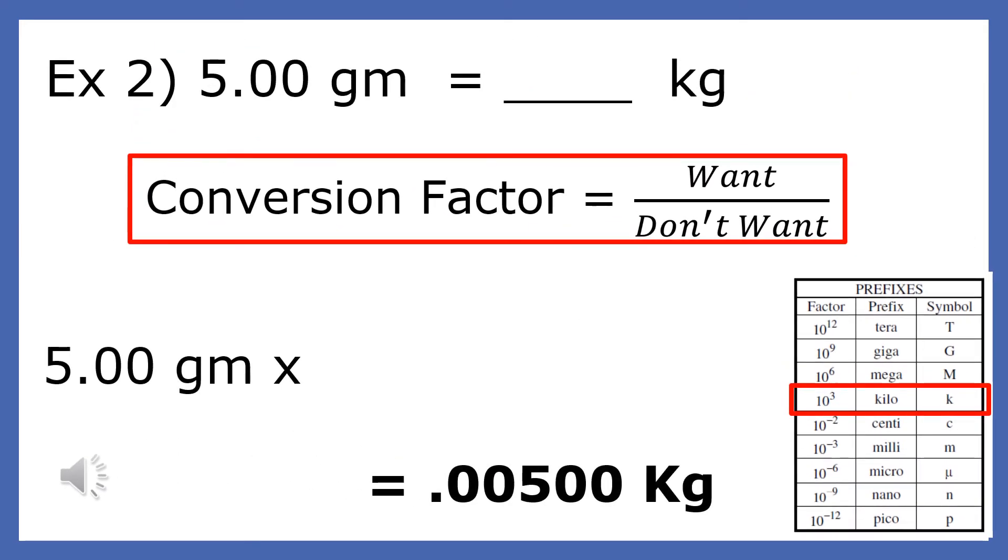Example 2. The standard unit of mass is kilograms. So we will need to create a conversion factor to convert this into the proper units. We make a ratio with the unit we want in the numerator and the unit we don't want in the denominator. 1 kilogram equals 1,000 grams because kilo means 1,000. Our conversion factor has kilograms in the numerator and grams in the denominator. Since the original mass has three significant figures, so should our answer.